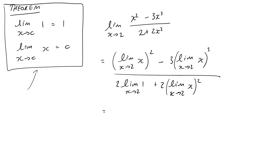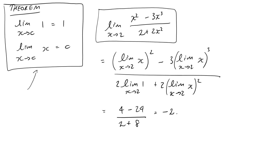In practice we wouldn't write all this out because we're used to just plugging a number in, but the algebraic limit theorem combined with those two simple cases actually lets us do this rigorously. Plugging in x = 2 gives (4 - 24) over (2 + 8), which equals -20/10 = -2. So long as the denominator is not zero we can evaluate any such fraction. The algebraic limit theorem is really powerful for evaluating limits in practice without always having to set up a complicated epsilon-delta argument.